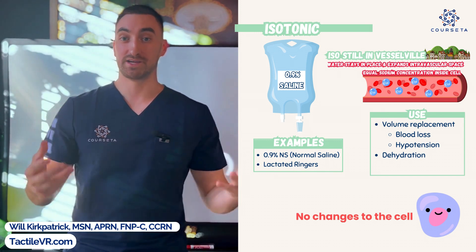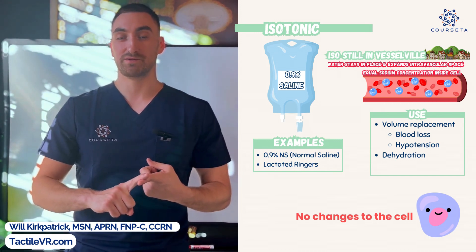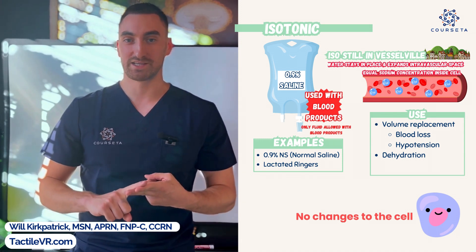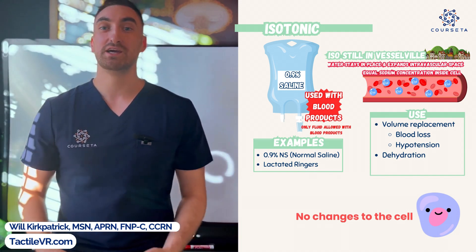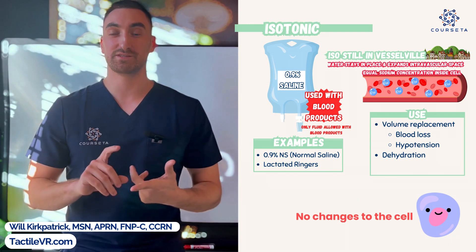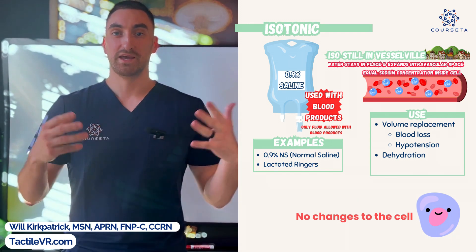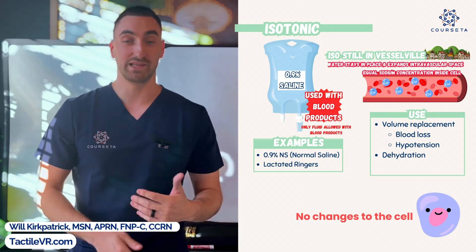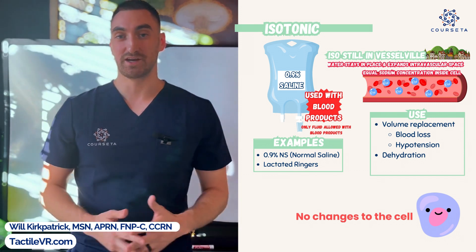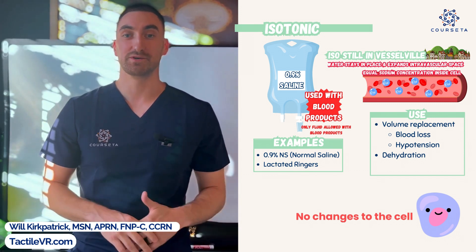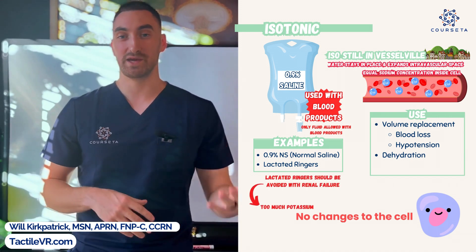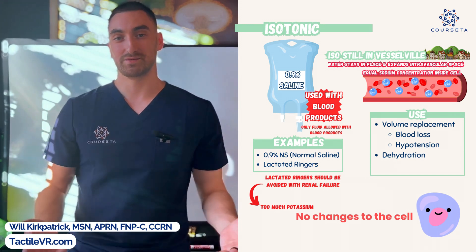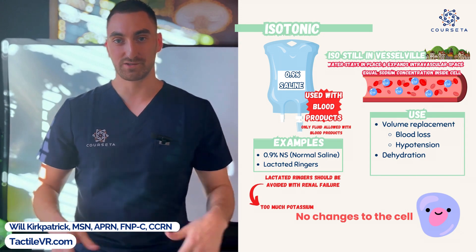Some quick NCLEX facts about isotonic fluids: normal saline is the only IV fluid compatible with giving blood. Isotonic fluids are the safest to give without disrupting the cell, making them the go-to for hypotensive or dehydrated patients, since dehydration is related to hypotension. Finally, never give lactated ringers to a kidney patient because it's higher in potassium content, and kidney patients retain potassium — so avoid lactated ringers with kidney failure.